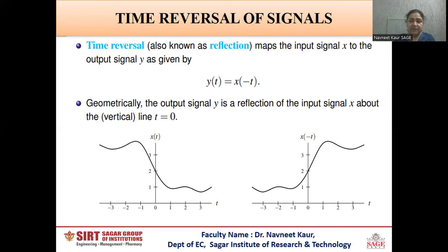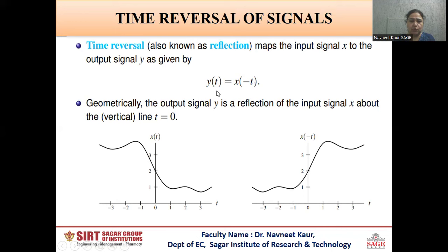Another operation which can be performed on a signal is the time reversal of a signal. Time reversal is also known as reflection or folding. It maps the input signal x to the output signal given by y(t) = x(-t). That means if the signal was initially having a value at t = 1, the new signal will have the same value at t = -1. For example, if I put t = 1, then y(1) = x(-1). That means y will have a value at t = 1 which is the same as the value x had at t = -1. So I will get the mirror image of the signal x(t) in my new signal y(t), and the output signal is a reflection of the input signal about the y axis at t = 0.